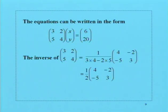The equation can be written in the form where you have a matrix times another matrix equal to a matrix. The first matrix (3, 2, 5, 4) contains the coefficients of x and y. The next matrix contains the variables x and y. (6, 20) represents the constant values on the right-hand side of the equation.